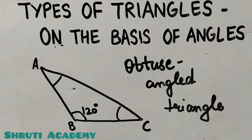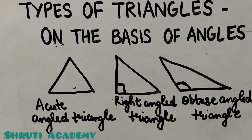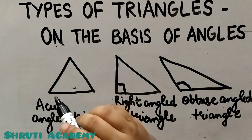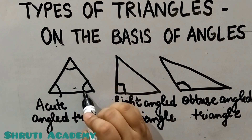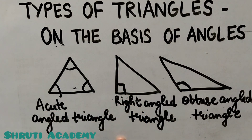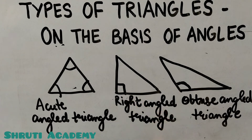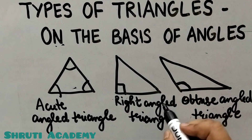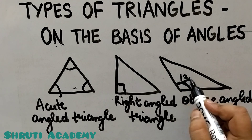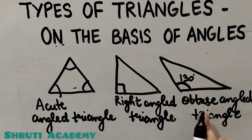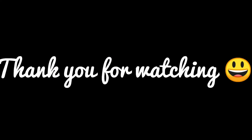So to summarize: if all angles are acute, it is an Acute Angle Triangle. If one angle is a right angle — 90 degrees — it is a Right Angle Triangle. And if one angle is obtuse — greater than 90 degrees, like 130 degrees — it is an Obtuse Angle Triangle. Hope you liked my video, thank you for watching.